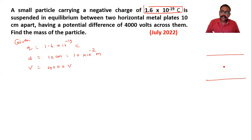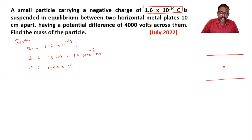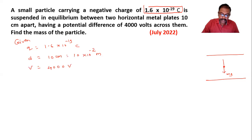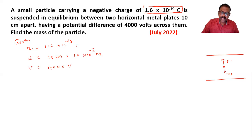We have to find the mass of the particle. Now let's see the forces acting on this charge. The downward force is weight, and the upward force is the electric force due to the potential difference of 4000 volts. That force we can write as qE in terms of electric intensity.